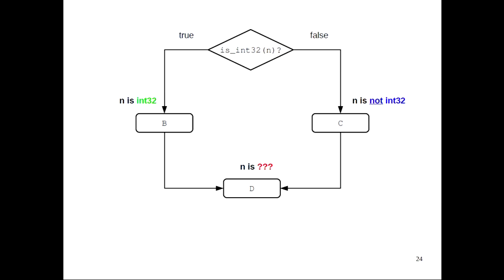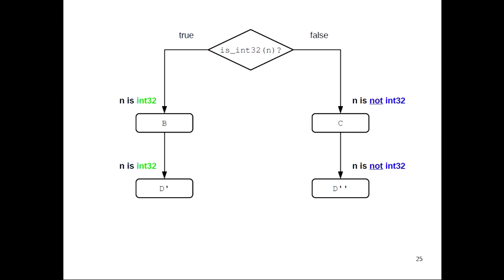So the idea of basic block versioning is that we can do tail duplication based on the types. If we duplicated block D into two versions, D-prime and D-double-prime, we can separate the control flow so that we have a block D where we know n is int32 and one where we know n is not int32.